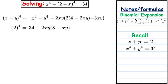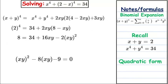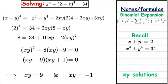Now continuing from this stage, we compute (x plus y)⁴ = 2⁴ = 16, and setting equal to 34 we rearrange. After multiplying through by 2 and bringing everything to one side, we get a quadratic in xy. Factoring this quadratic gives us xy equal to positive 9 and xy equal to negative 1 as our two sets of solutions.